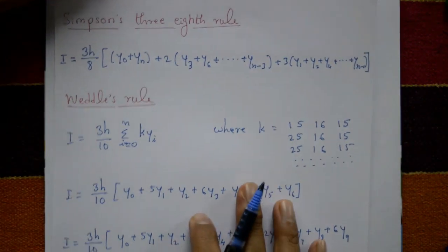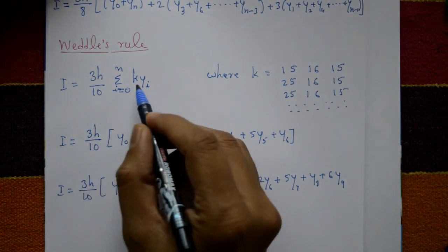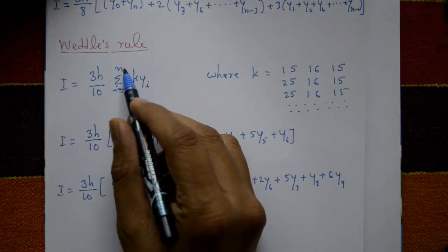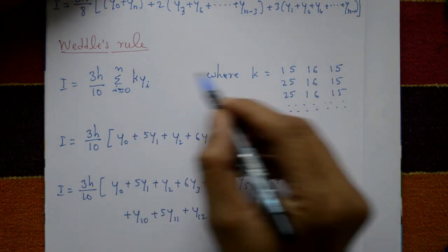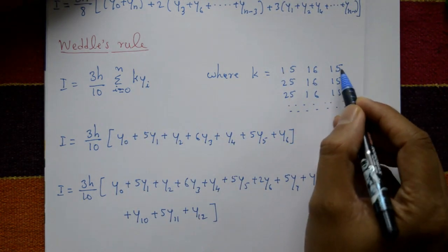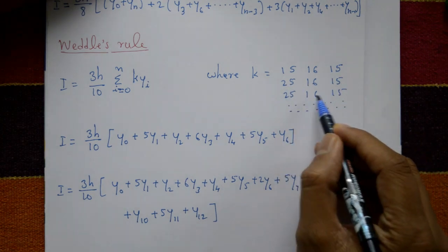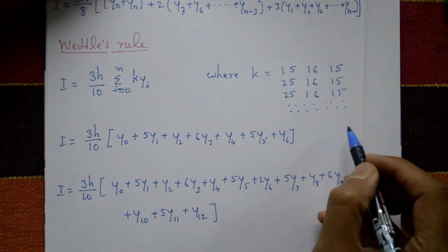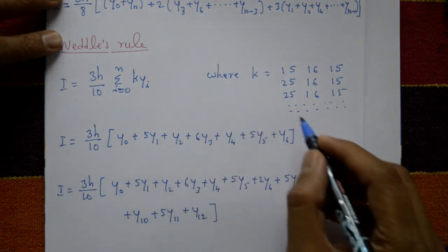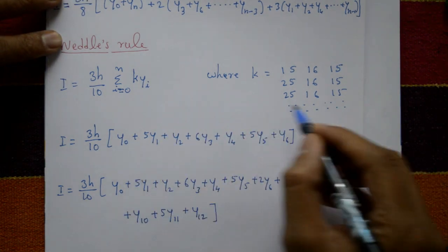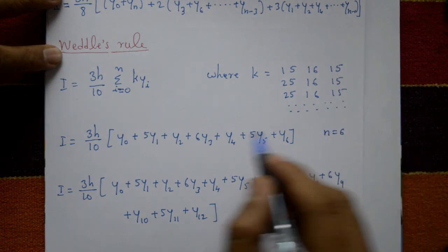Weddle's rule: I is equal to 3h by 10 times the summation from i=0 to n of k·y-n, where k is the repeating coefficient pattern: 1, 5, 1, 6, 1, 5, 2, 5, 1, 6, 1, 5, 1, and so on. If there are 7 ordinates, then n is equal to 6.